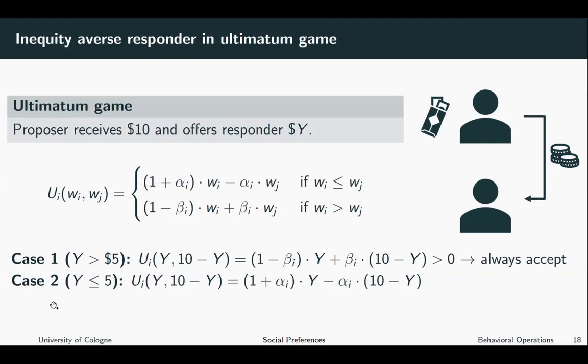Now let us look at the second case. In the second case, the responder is offered less than half of the pie. In this case, we take the first line of this formula and plug it in here and also insert the numbers.